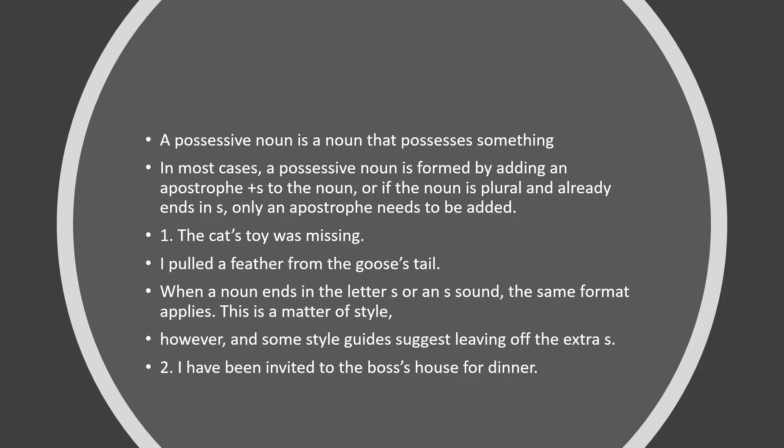A possessive noun is the noun which completes the sentence or which makes the sense of the sentence. For example, we say 'This is his pen,' or 'My father's name is this,' or 'My mother's name is this.' For these conditions, we use the possessive noun. A possessive noun is a noun that possesses something. In most cases, a possessive noun is formed by adding an apostrophe plus S to the noun.